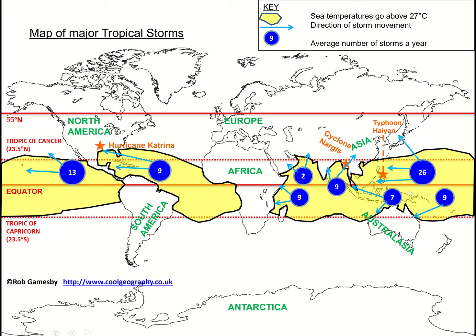The most tropical storms occur across the Asian Pacific. We get quite a significant number in Asia and a significant number in the Atlantic as well.